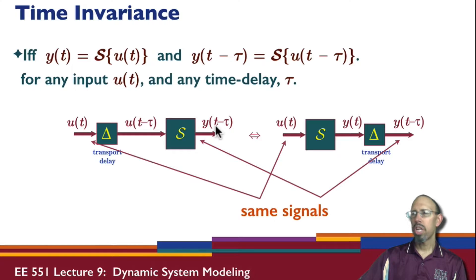If we start with the same input signals, do we get the same output signals? Or in other words, do these two operators, the delay operator and the system operator, do they commute? Does it matter which order we put them in? If it doesn't matter, then the system is said to be time invariant.